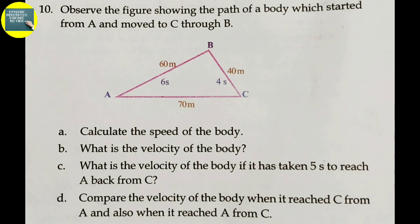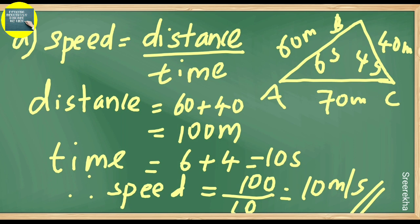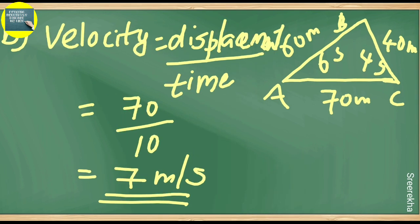Last question: Observe the figure showing the path of a body which started from A and moved to C through B. The path distance from A through B to C is 100 meters; the straight-line distance is 70 meters. Speed equals distance divided by time: 100 divided by 10 seconds equals 10 meters per second.